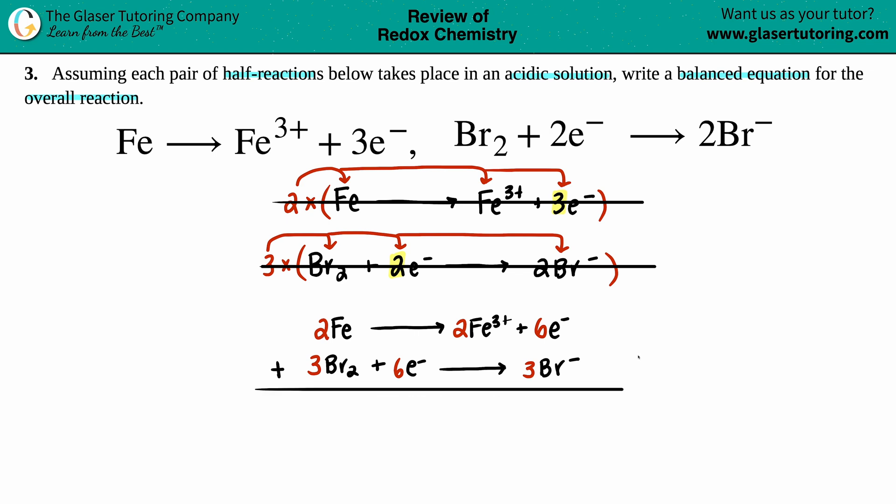When you add the equations up, you're combining them into one equation and you cancel things out that are on opposite sides that are the same. So six electrons and six electrons—they go bye bye. And then I just look and see if I have any other thing that's the same on both sides, but I don't, so I just rewrite it.